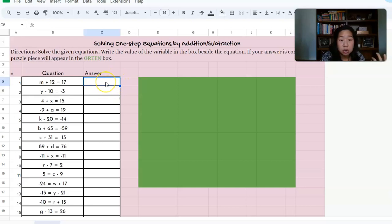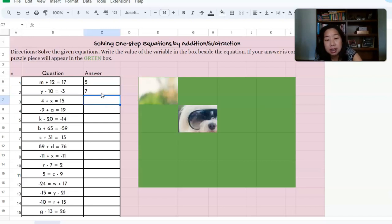Or if they just know the answer they can plug it in and the answer would be 5. So if the answer is correct you can see a piece of the puzzle has appeared. Same thing with the next one: y minus 10 equals negative 3, so I believe the answer is going to be 7. Another piece of the puzzle has appeared. When your students have completed all of the questions this whole picture will appear and they'll be able to see what the mystery picture is.